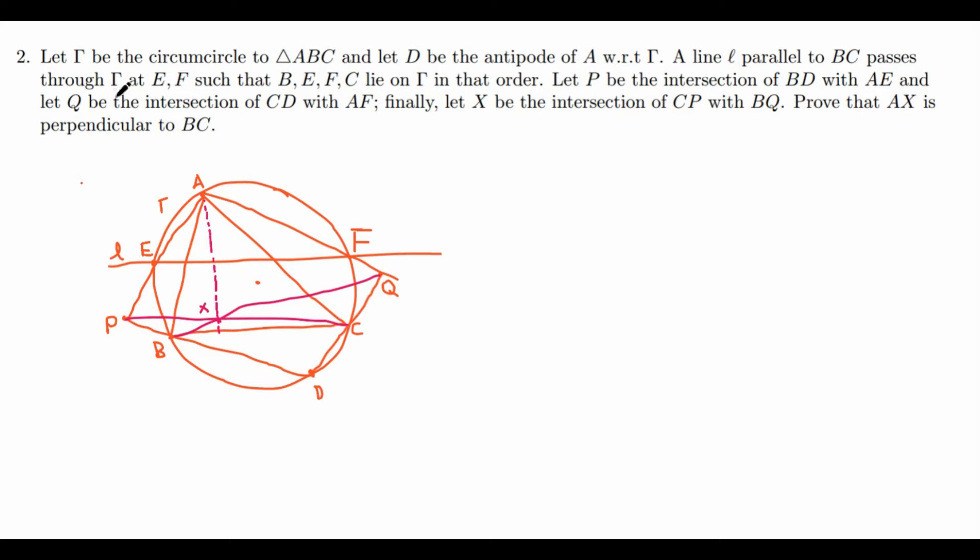So at first, this problem looks kind of complicated since there are so many intersections. For example, P is the definition of an intersection, Q is the definition of an intersection, and X is also the definition of an intersection. So how should we go about solving this? Well, first we can try making some observations to make our jobs a little bit simpler in finding some sort of relation between all these points.